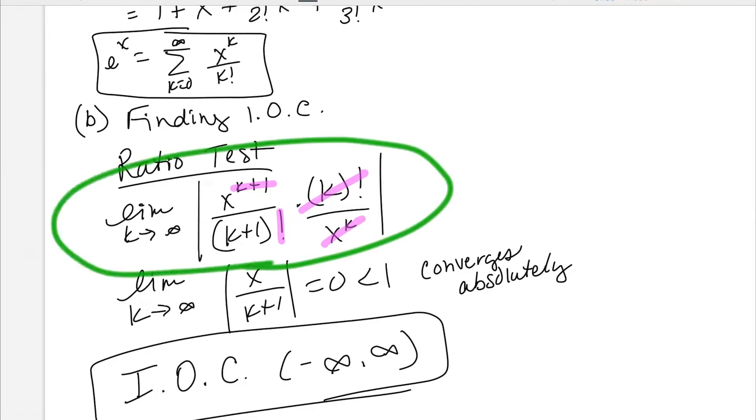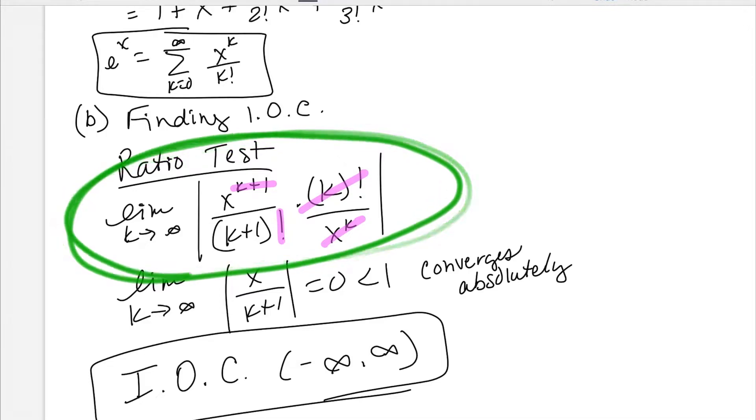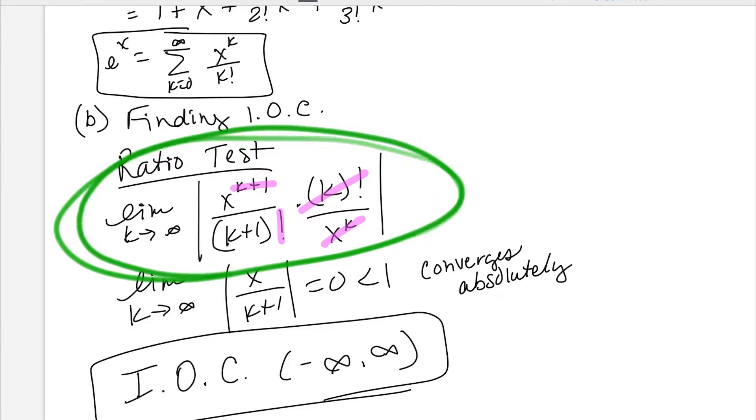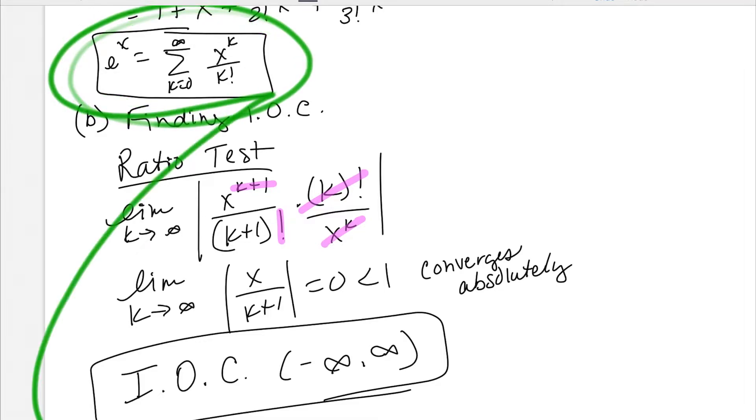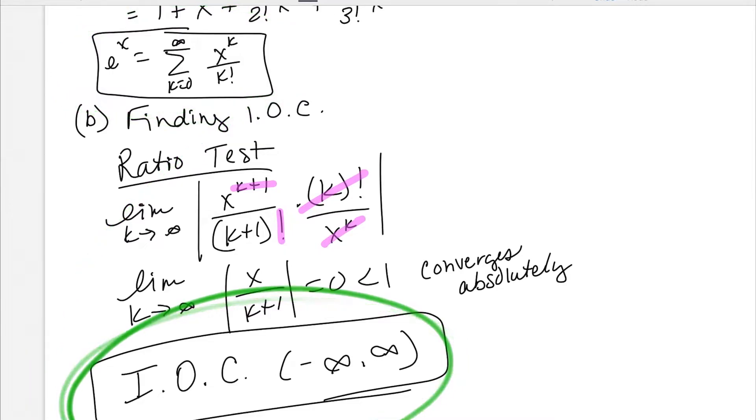My interval of convergence here for my Maclaurin is from negative infinity to positive infinity. If this wigged you out, make sure you're sending me an email or asking me in class when we have our virtual sessions. You could always write it all the way out, and then you can come up with that.